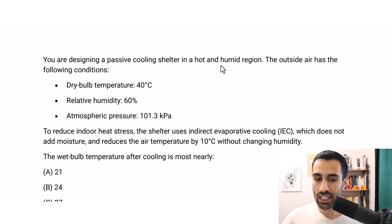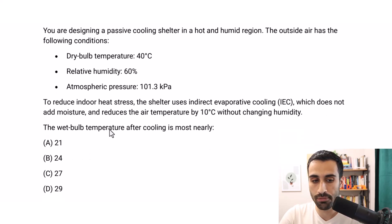To reduce indoor heat stress, the shelter uses indirect evaporative cooling (IEC), which does not add moisture and reduces the air temperature by 10°C without changing humidity. The wet bulb temperature after cooling is most nearly what? That's what we want to find.